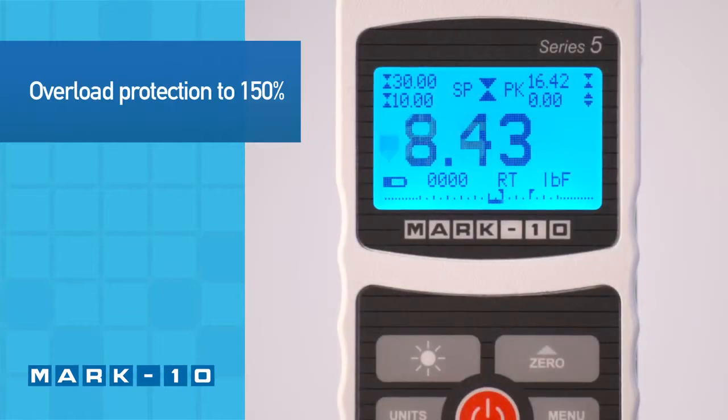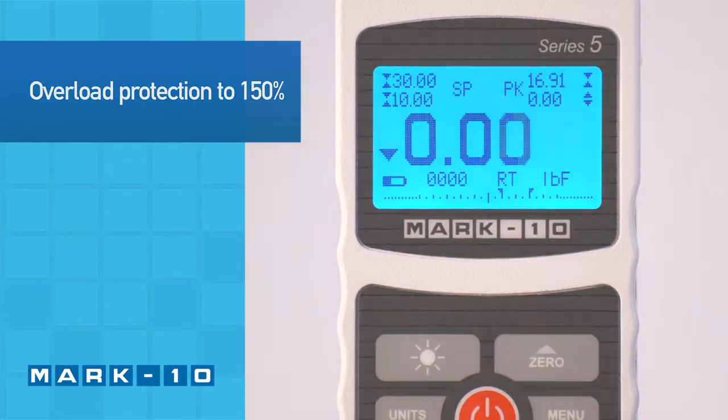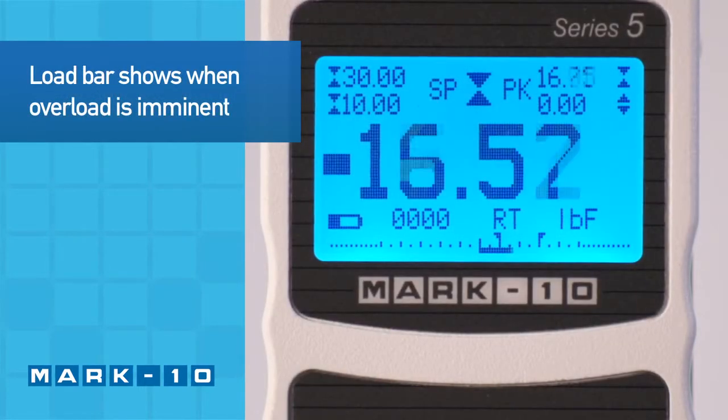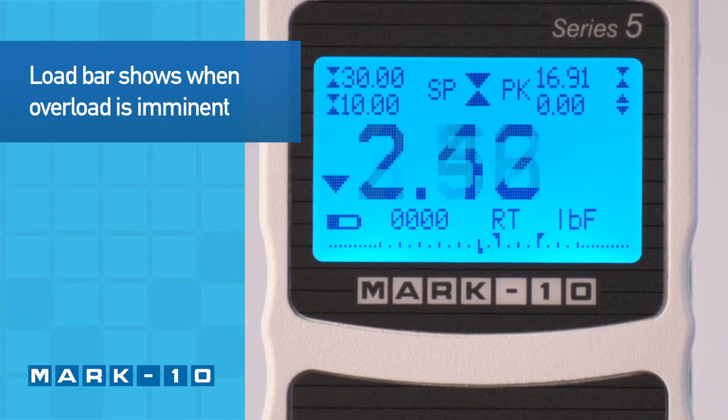The force gauge is overload protected to 150% of its capacity. For visual convenience, the load bar at the bottom of the display shows when an overload is imminent.